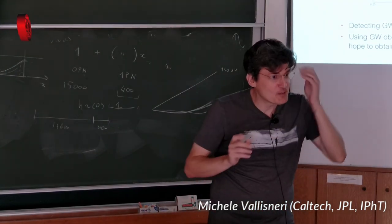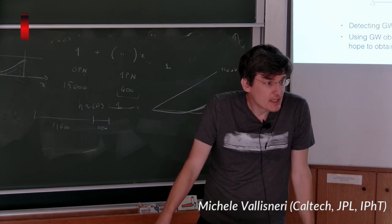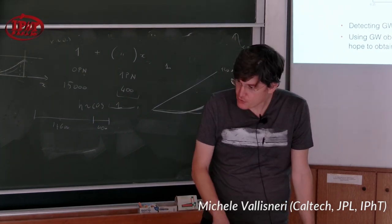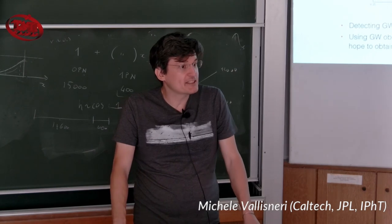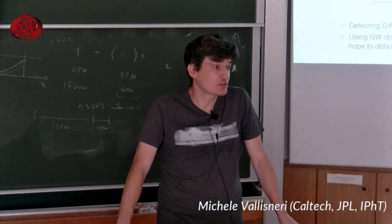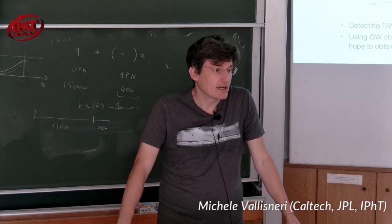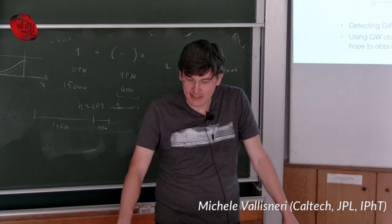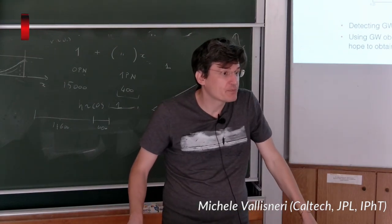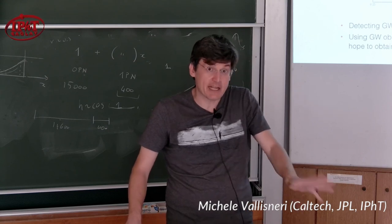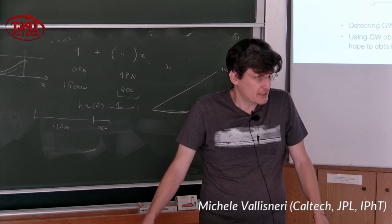I was looking up this thing about the tidal Love numbers of black holes. The matching calculations show that all the Love numbers vanish — meaning you don't couple to any derivative-squared of Riemann at any order. So the first coupling is at the cubic-in-Riemann level. Even that one, at least at the time of the papers I've read, those coefficients had not been computed — the non-linear tidal deformations. So it was unknown whether these non-linear Love numbers were zero.